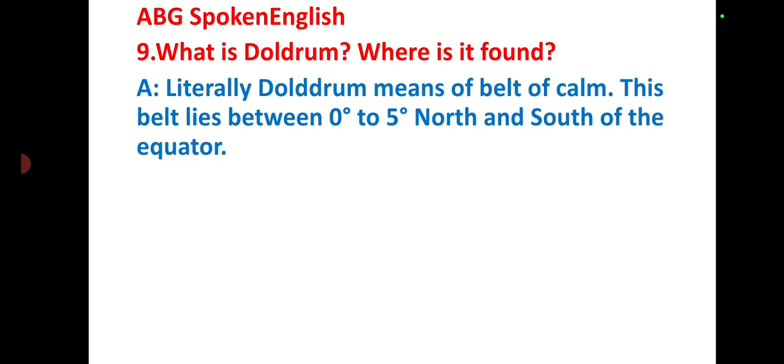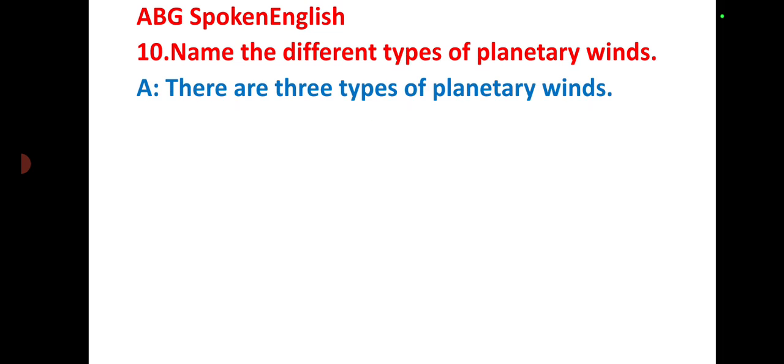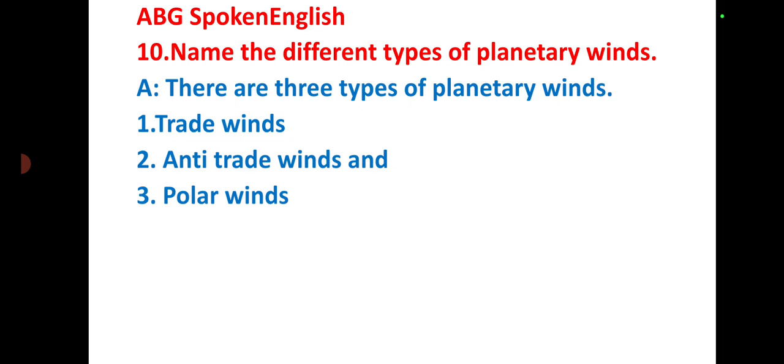Name the different types of planetary winds. There are three types of planetary winds: trade winds, anti-trade winds, and polar winds.